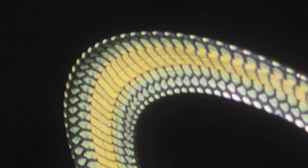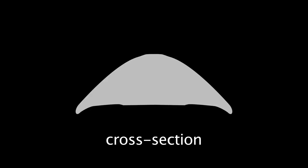This flattening creates an unusual cross-sectional shape. We wanted to understand how this shape helps the snake to glide.